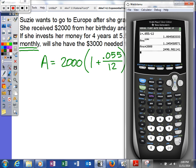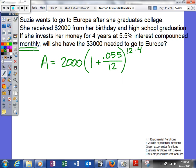So we do this, we get this. So our answer, it looks like it's going to be $2,490.90.